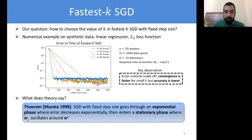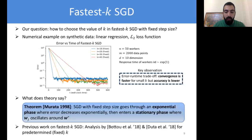Theory tells us that SGD with fixed step size goes through an exponential phase where the error decreases exponentially, then enters a stationary phase where W_j oscillates around W*. This phase transition is visible in the graphs: first an exponential decrease, then the error hits a plateau and starts oscillating. Fastest-k SGD has been studied by Reisizadeh et al. and Dutta et al. for a predetermined fixed k, but the problem of optimizing the error-runtime tradeoff in terms of k has not yet been studied.